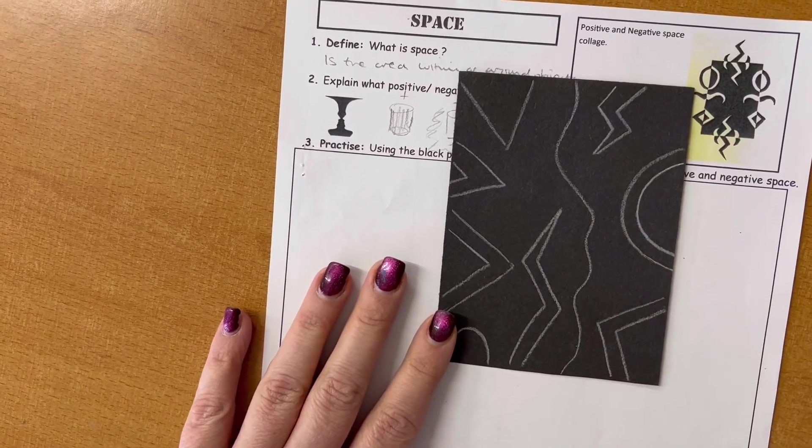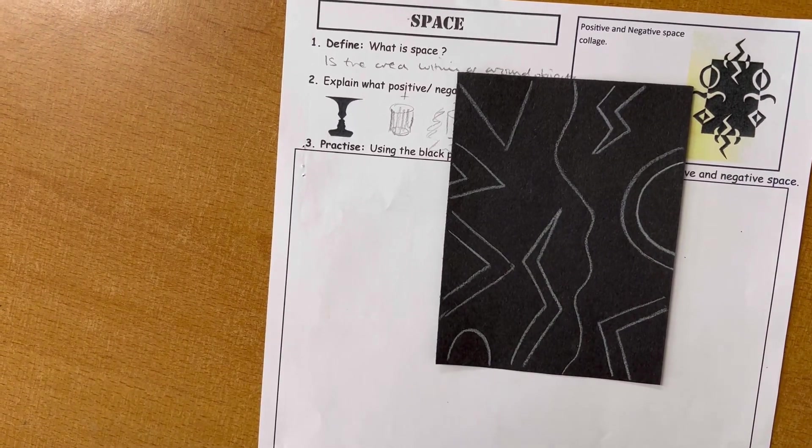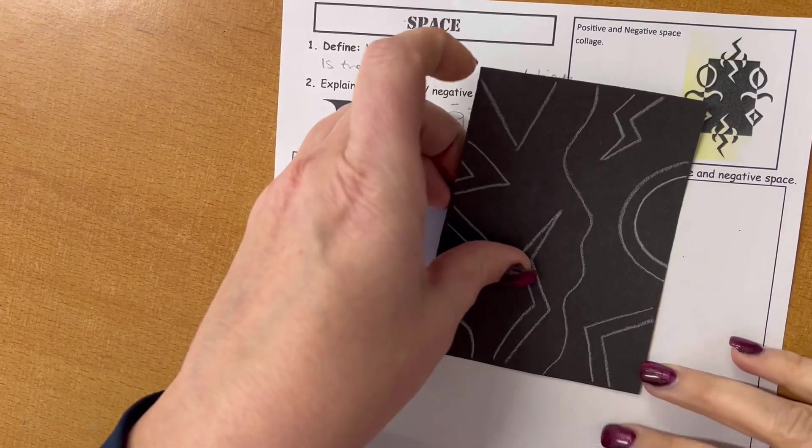So now that I've drawn my shapes, I'm going to get some scissors and I'm going to cut the shapes out one at a time.